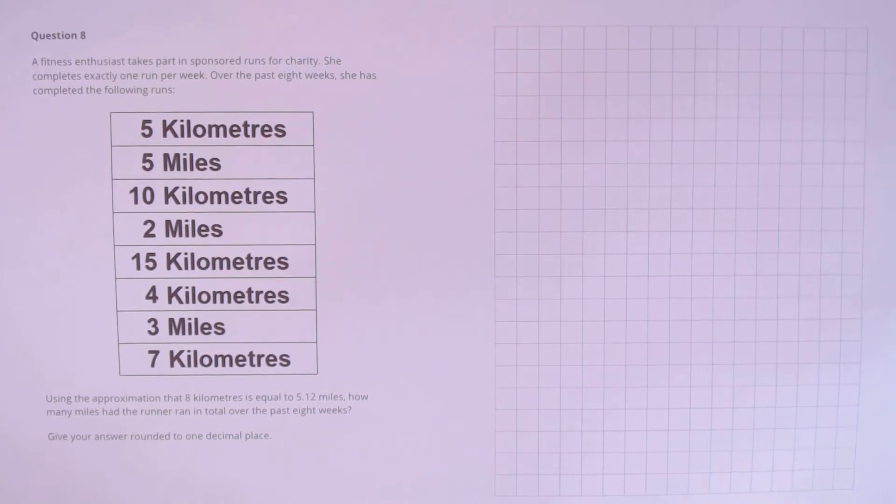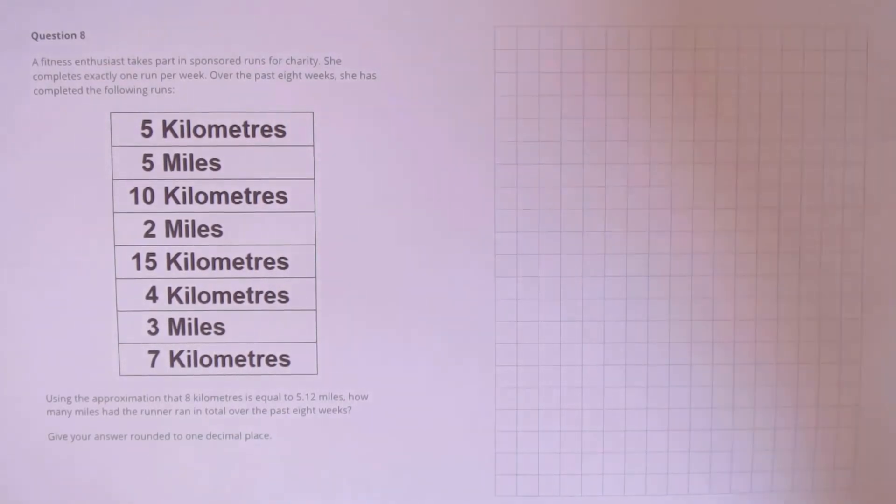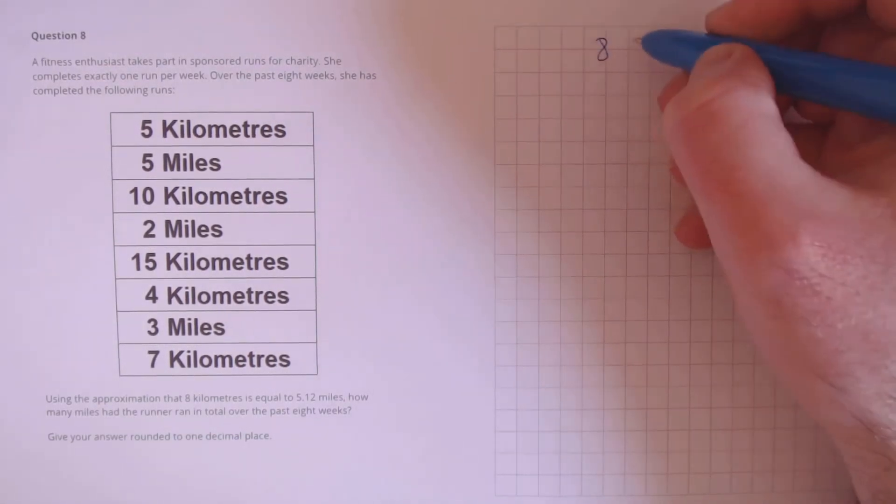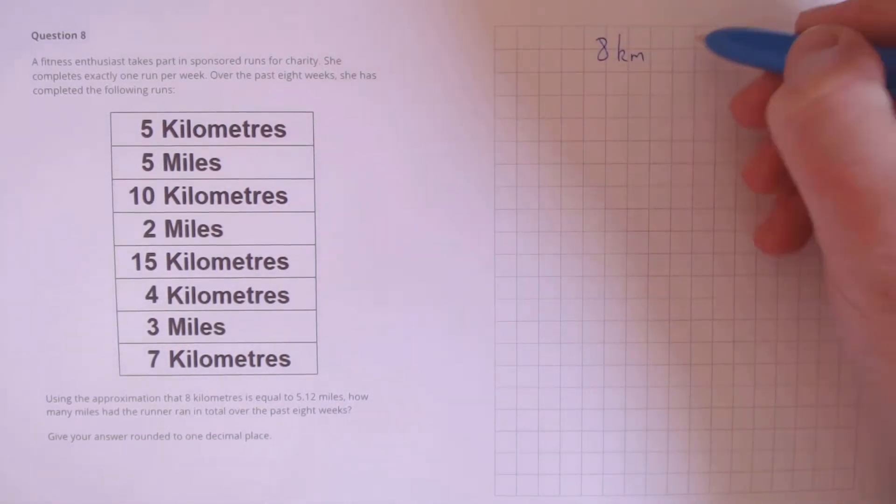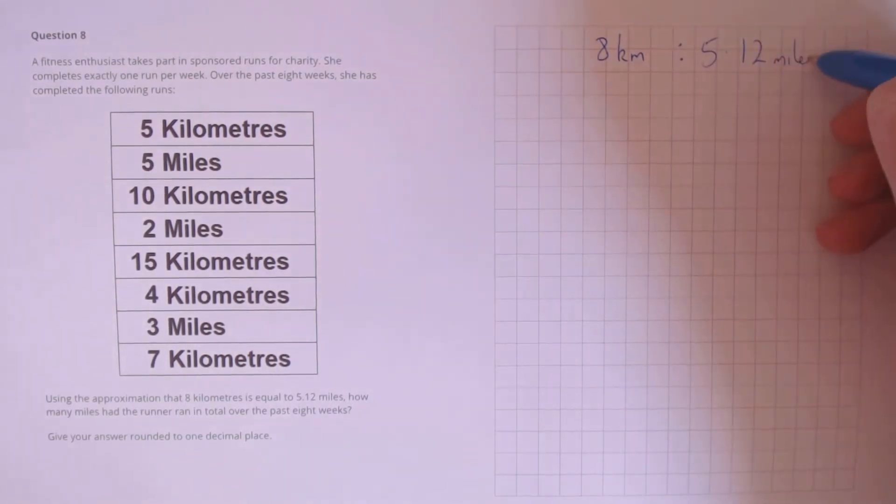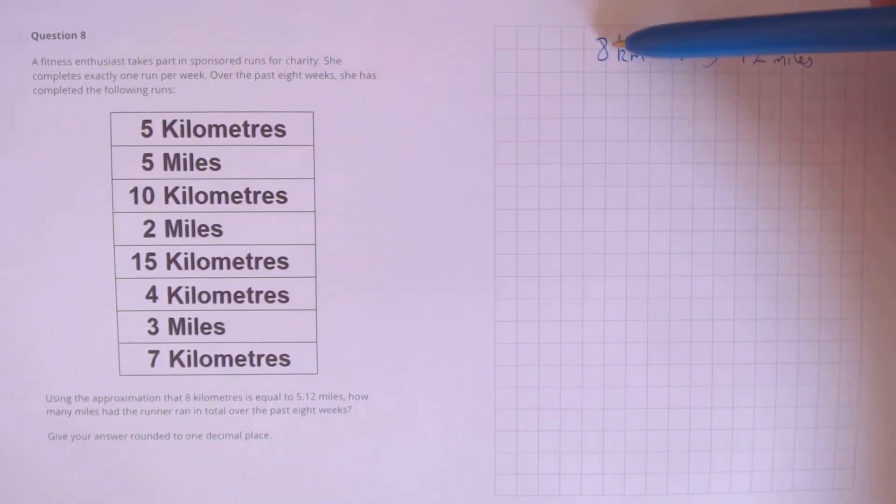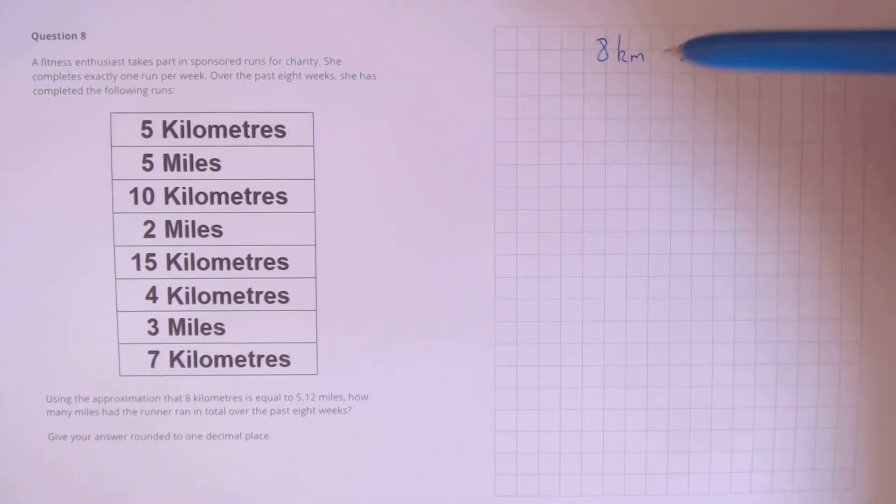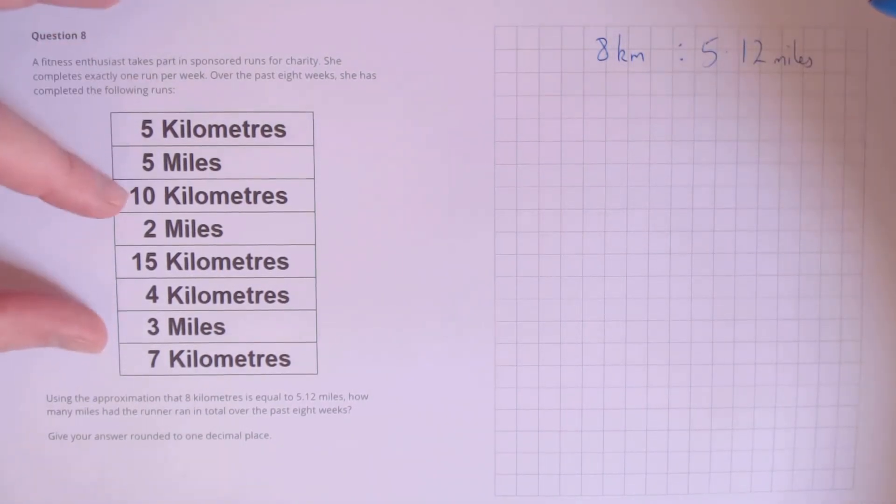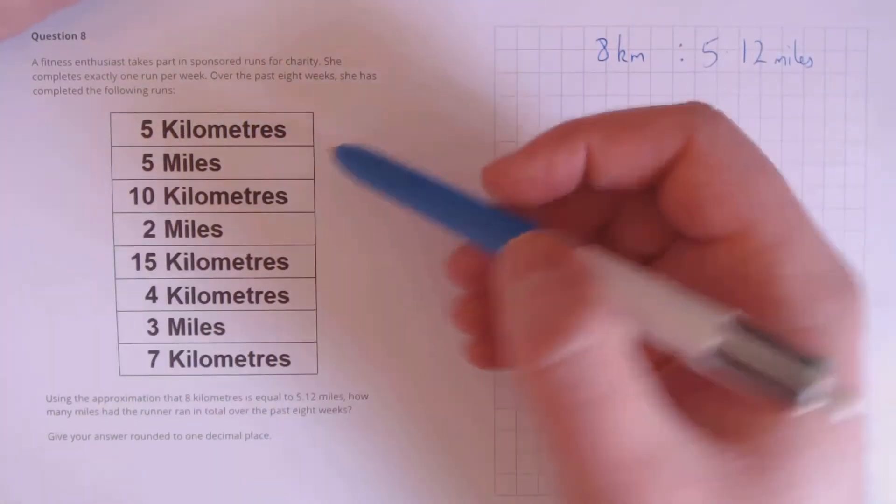Question 8. A fitness enthusiast takes part in sponsored runs for charity. She completes exactly one run per week. Over the past 8 weeks she has completed the following runs. Using the approximation that 8 kilometres is equal to 5.12 miles, how many miles has the runner run in total over the past 8 weeks? Give your answer rounded to 1 decimal place. We have our ratio 8 kilometres to 5.12 miles. Once we've got our total number of kilometres and total number of miles, we'll be able to do this conversion to convert them all into miles. So let's add these up.